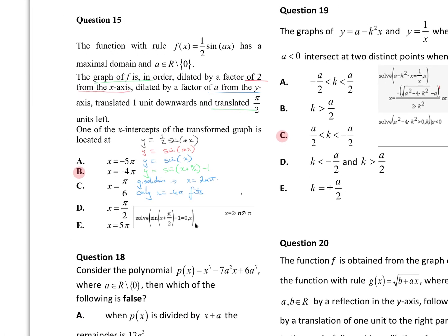A function with the rule of half sine ax has a maximal domain, where a is not equal to 0. The graph of f is dilated by a factor of 2 from the x-axis, and dilated by a factor of α from the y-axis. Starting with y equal to a half sine ax, if I dilate by a factor of 2 from the x-axis, I multiply the whole function by 2, giving me sine ax as my new rule.